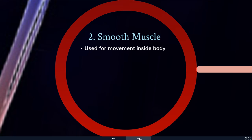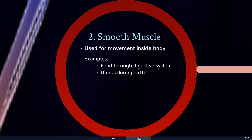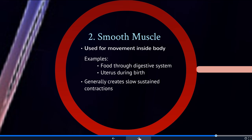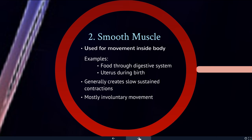Smooth muscle is used for movement inside the body. For example, smooth muscle helps move your food through your digestive system, and it also wraps around the uterus and produces wave-like contractions during birth. Generally, smooth muscle creates very slow, sustained contractions and is involuntary — you can't decide to move your breakfast down another inch in your small intestine. It just happens automatically.